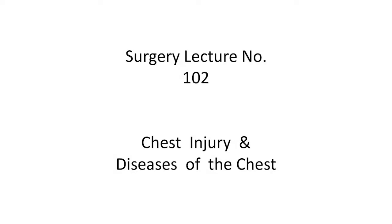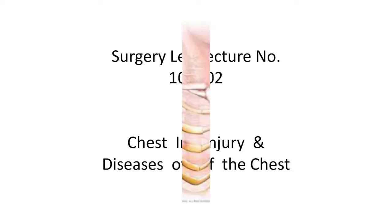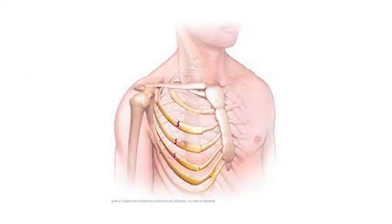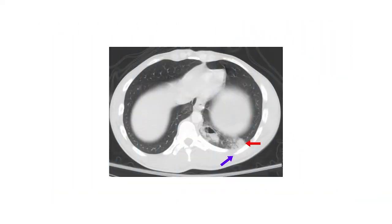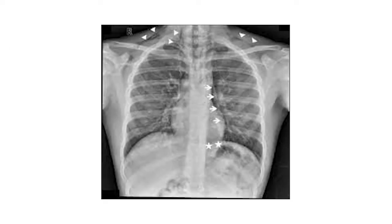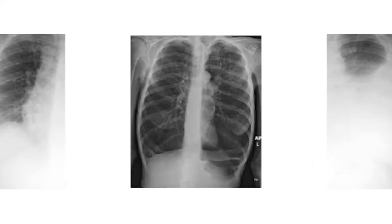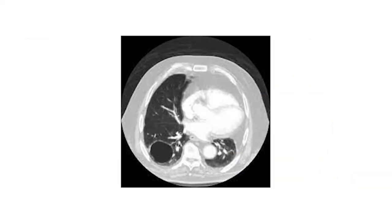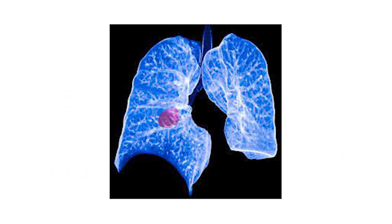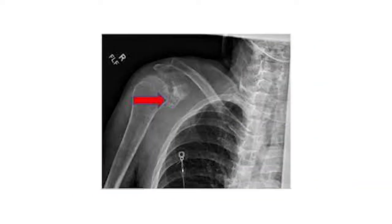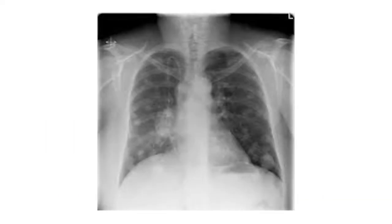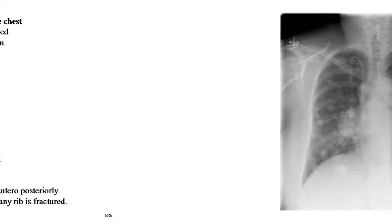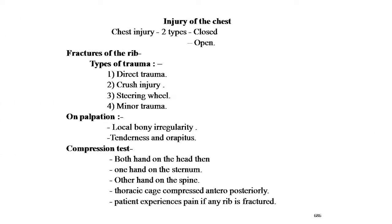Welcome, dear students, to surgery lecture number 102 — chest injury and disease of the chest. In this lecture we will explore: injury to the chest, fracture of the rib and its treatment, traumatic hemothorax, contusion and laceration of the lung, mediastinal emphysema, diseases of the chest, pleural effusion, empyema thoracis, treatment of pulmonary tuberculosis, lung abscess, lung cyst, tumors of the bronchi and lungs, primary carcinoma of the lung, Pancoast tumors, and secondary carcinoma of the lungs.